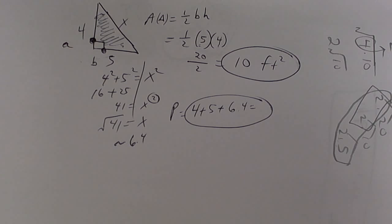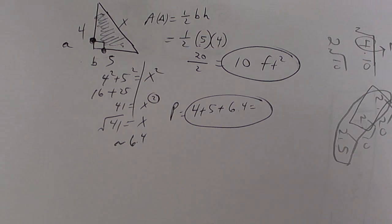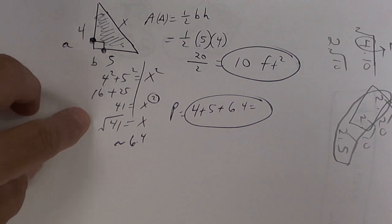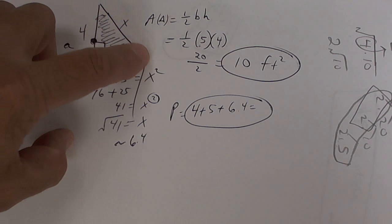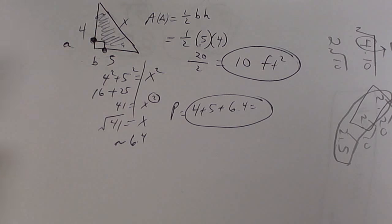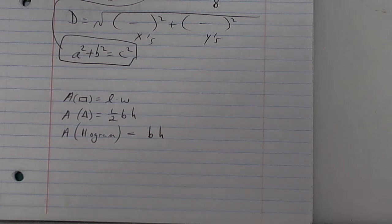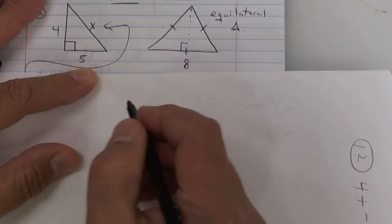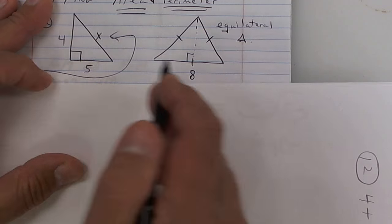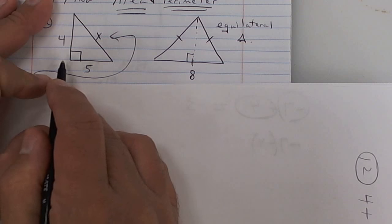Most of you did Algebra 1 successfully, and there it is. So that is Pythagorean's theorem, and you need that to get x. On the next one, perimeter is easy. This one, area was easy.